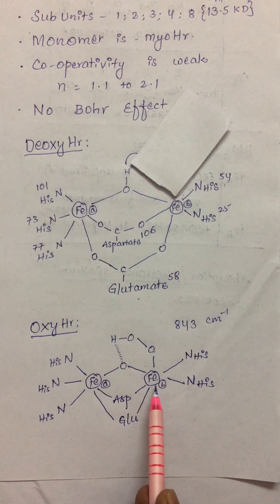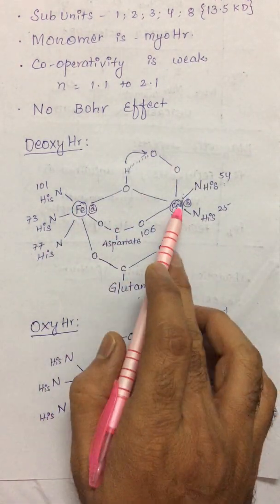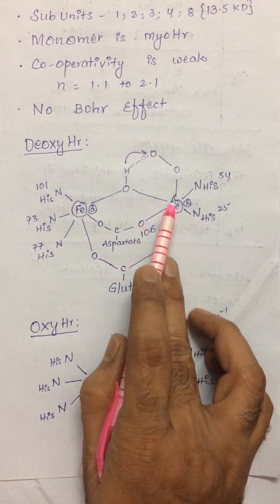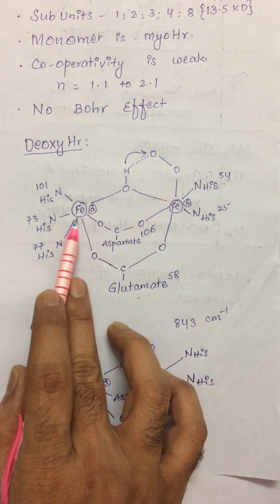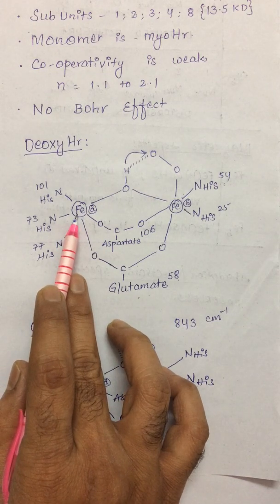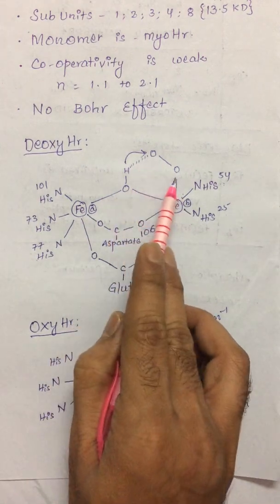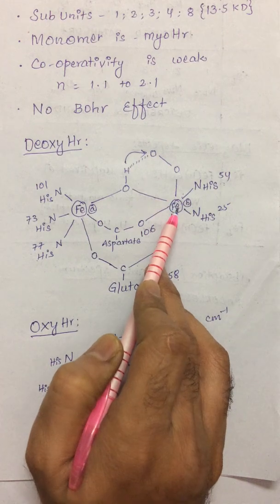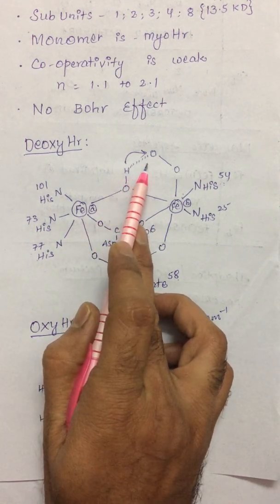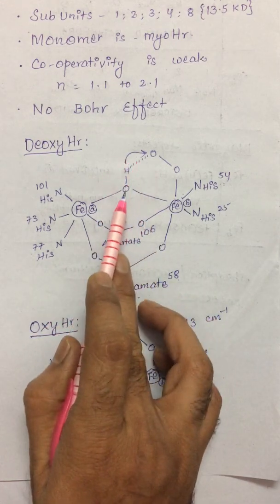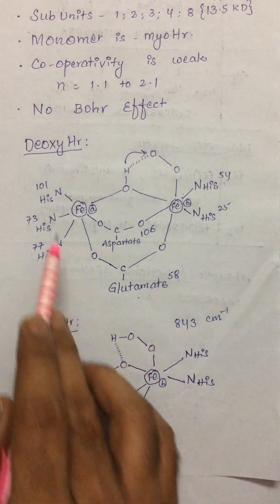The hydroxo bridge converts to an oxo bridge as follows: dioxygen comes and binds to iron B, which initially has coordination number five, shifting it to six. Slowly, the dioxygen is converted into the peroxo form. In the deoxy form, both irons are in the +2 oxidation state (high spin); in the oxy form, both are converted to low spin +3 oxidation state, and the two electrons are transferred to dioxygen. Once dioxygen binds, a hydrogen bond forms with the hydrogen of the hydroxo bridge; as this strengthens, the hydrogen shifts onto the peroxo oxygen, converting the hydroxo bridge into an oxo bridge, while maintaining hydrogen bonding with the hydroperoxide.